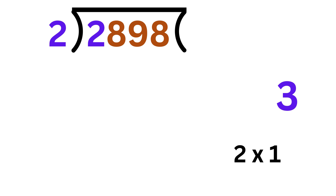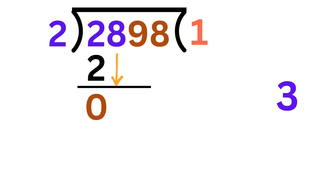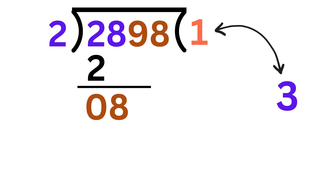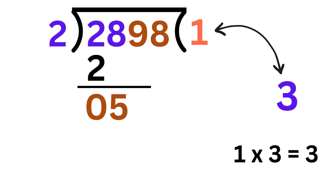We all know that 2 times 1 is 2, so write 1 here and 2 here, and our remainder will be 0. Now bring this 8 here, and we will get 08, or 8 here. Now this quotient that we have got, which is 1, we will have to multiply it with this 3. So 1 times 3 is 3. Then simply subtract this 3 from this 8, and we will be left with 5.